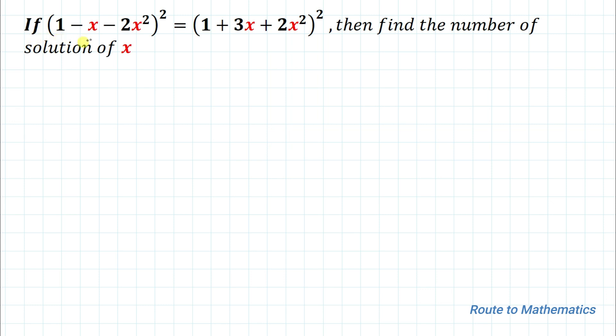The given question is: if (1 - x - 2x²)² equals (1 + 3x + 2x²)², then find the number of solutions of x.